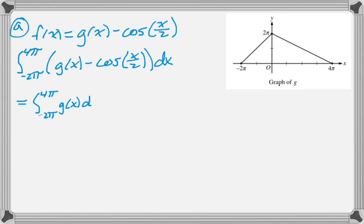So negative 2π to 4π of g of x dx, which we're just going to do geometry on, and then negative 2π to 4π of cosine of x over 2 dx. And that one we're going to use the fundamental theorem for.